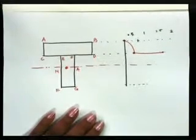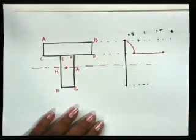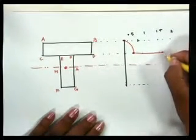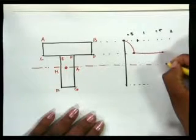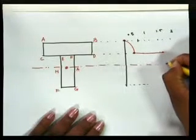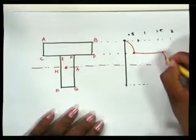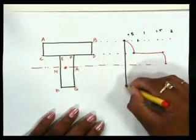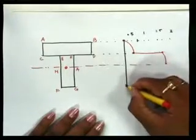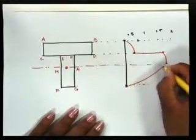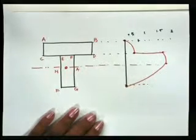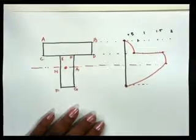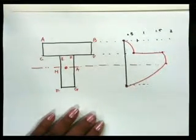Then at neutral axis, it is 1.85. So 1.85 at neutral axis is somewhere over here. Again, we can show by a curve. At the bottom point it is 0, so we can join this. This diagram is called as a stress distribution diagram.